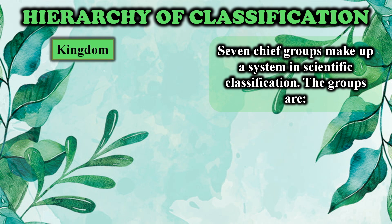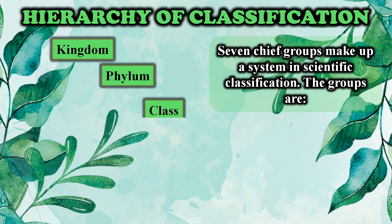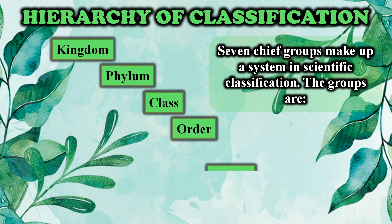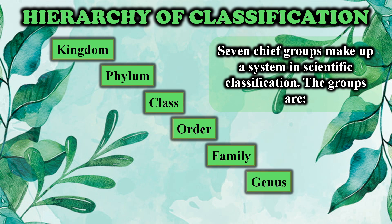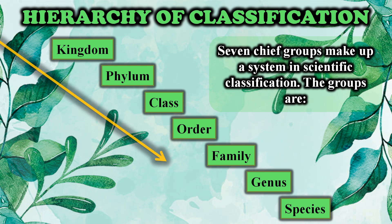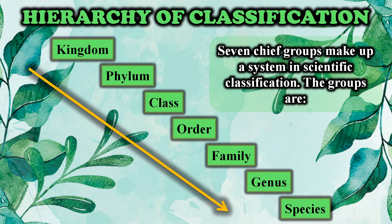The groups are kingdom, phylum, class, order, family, genus and species. As we go on to the next level, we narrow down to a particular organism.